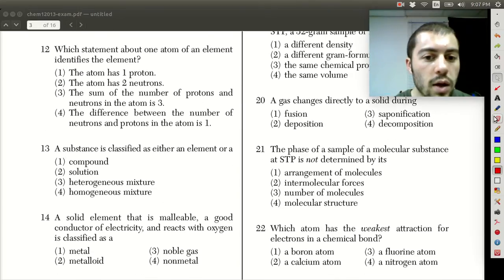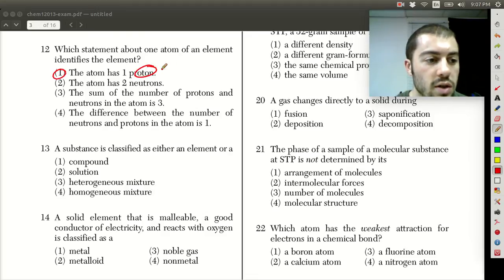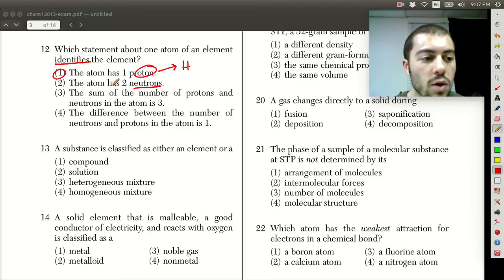For number 12, which statement about an atom identifies the element? The atom has one proton. Remember, a proton is what defines what an element is. If it has one proton, that means it must be hydrogen. If an atom has two neutrons, that could be a couple different elements - could be helium, could be lithium. Different isotopes have different numbers of neutrons, so neutrons don't tell us what identifies the element. It can't be the number of neutrons because that varies based on different isotopes. The sum of protons and neutrons being 3 - that could be different isotopes of different elements. If neutrons are involved and can vary, that doesn't definitively tell us what element something is. Same thing with the difference between neutrons and protons being 1 - we could get a difference of 1 for a bunch of different elements.